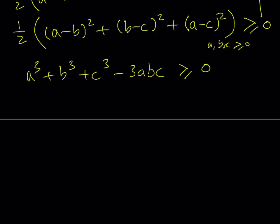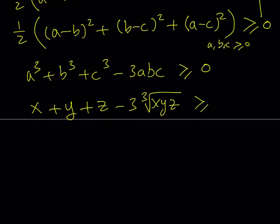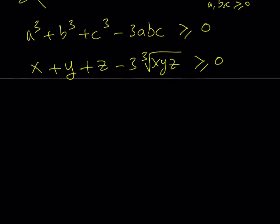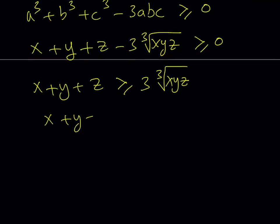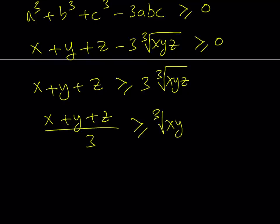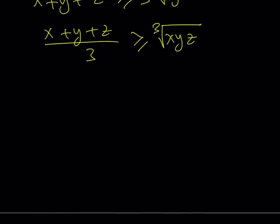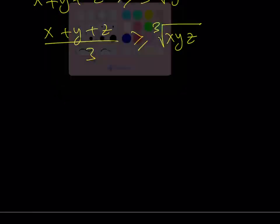Now we back-substitute, replacing A cubed with X, B cubed with Y, and C cubed with Z. This shows that X plus Y plus Z minus three times the cube root of XYZ is greater than or equal to zero, which was 3D. Therefore X plus Y plus Z is greater than or equal to three times the cube root of XYZ, and dividing both sides by three gives X plus Y plus Z divided by three is greater than or equal to the cube root of XYZ. This is exactly the AM-GM inequality we set out to prove.